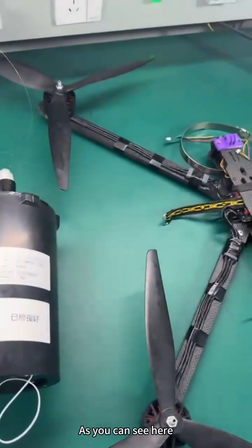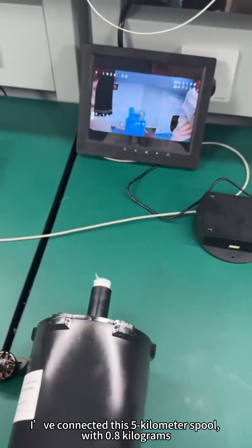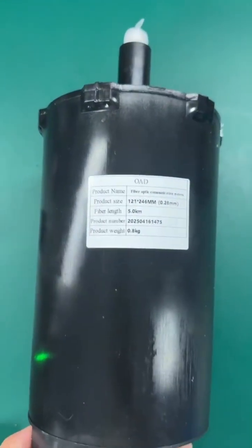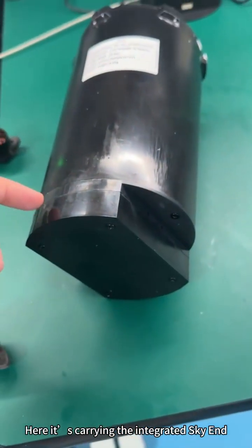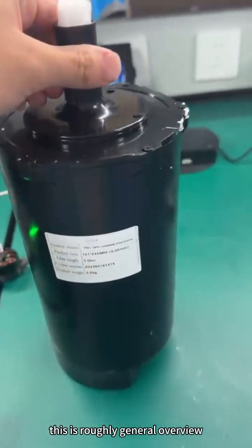As you can see here, I've connected this 5 kilometer spool with 0.8 kilograms. Here it's carrying the integrated sky end. This is roughly a general overview.